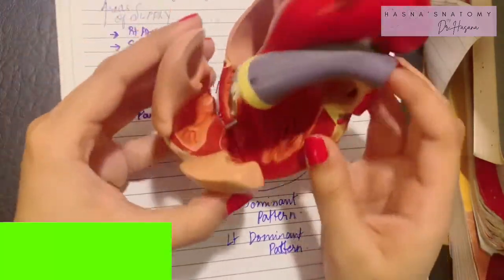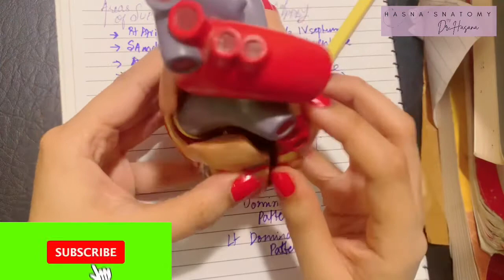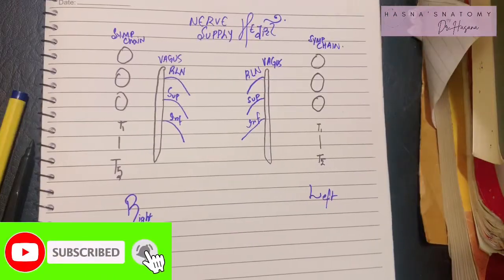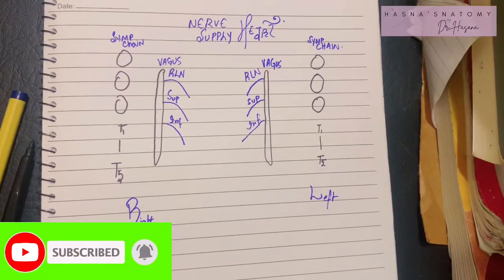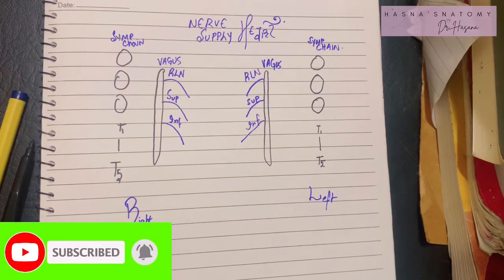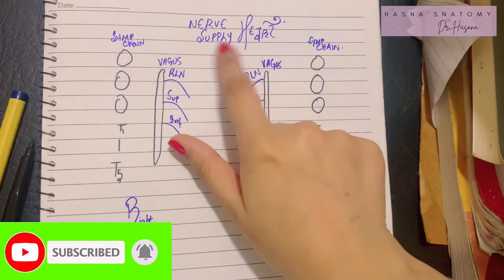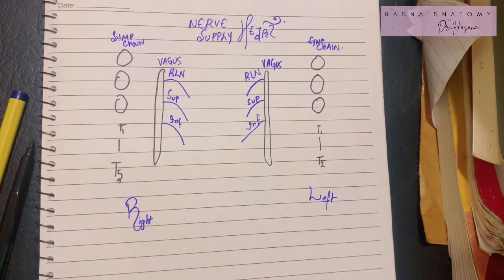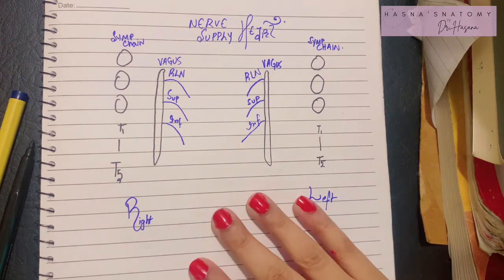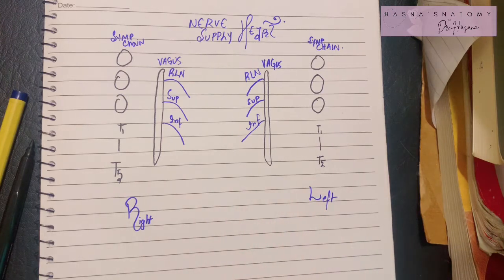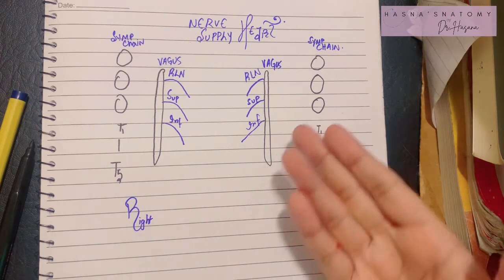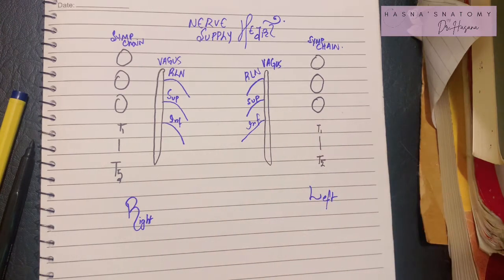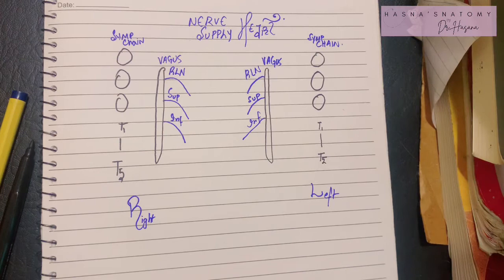That was all about the venous supply of the heart. Now let's study the nerve supply of the heart. The nerve supply of the heart is very simple — since the heart is a viscus, it is always supplied by autonomic nerves, which stand for the sympathetic and parasympathetic system.